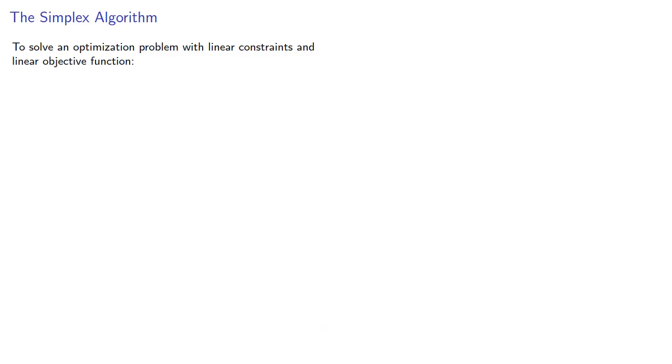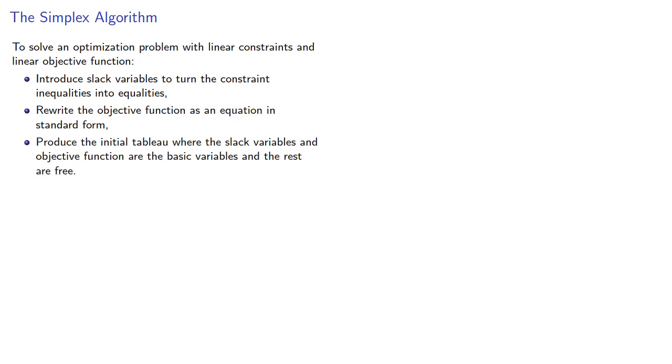To solve an optimization problem with linear constraints and linear objective function, introduce slack variables to turn the constraint inequalities into equalities, rewrite the objective function as an equation in standard form, produce the initial tableau where the slack variables and objective function are the basic variables and the rest are free.